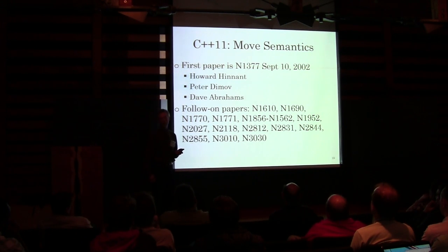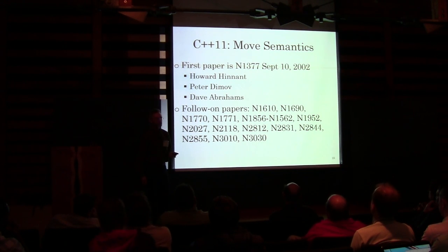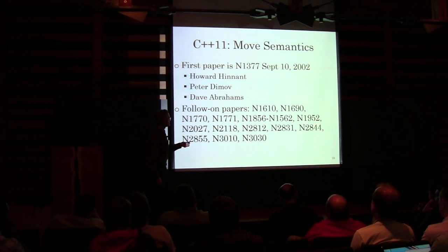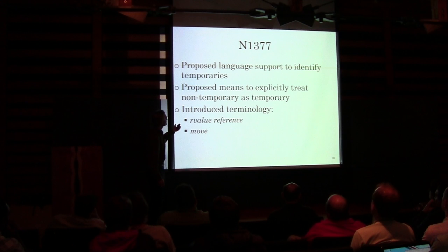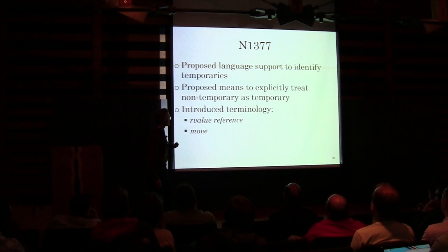There were folks on the Standards Committee who were really worried about this performance stuff. The first paper was September 2002 — Howard Hinnant, Peter Dimov, Dave Abrams. These are some of the brightest folks I've ever met. The first paper proposed language support to identify temporaries, a means to explicitly treat non-temporaries as temporaries, and introduced some terminology: an R-value reference and 'move.'